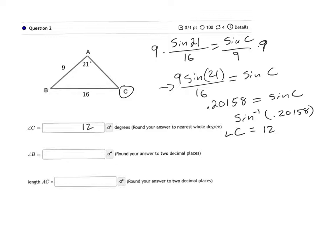Once I know that this is 12, I can find angle B by doing 180 degrees, because there's 180 degrees in a triangle, and then I'm going to subtract 21 and subtract 12. Well, 21 and 12 is 33, so I'm going to subtract 33, and that's going to give me 147.